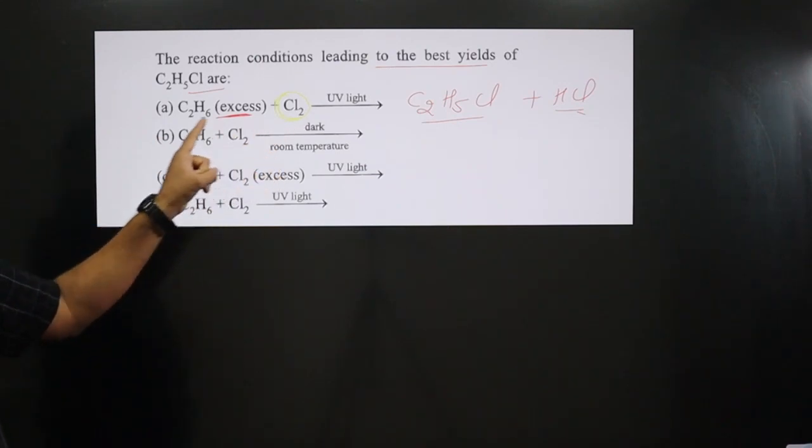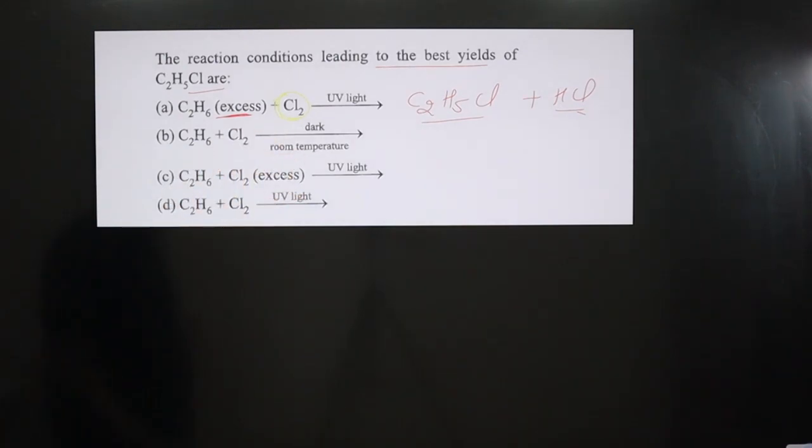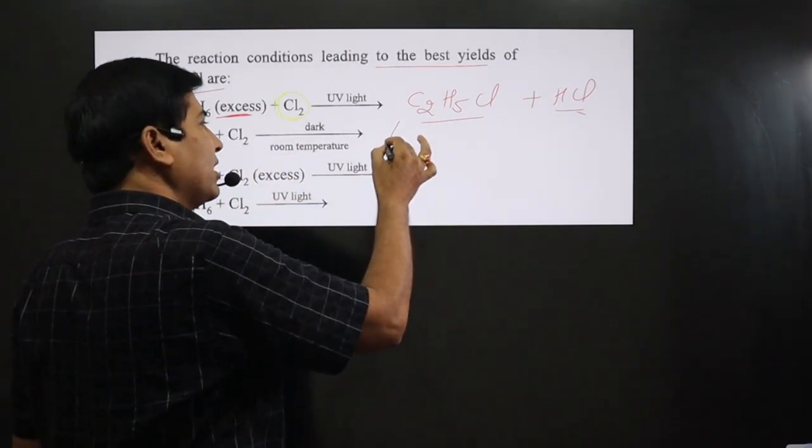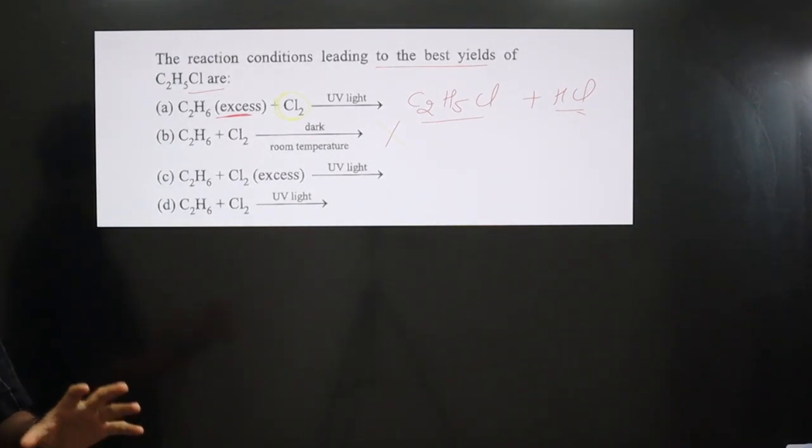Next we have halogenation reaction, but it is in dark room temperature. Keep in mind halogenation reaction does not take place in the dark. It is going below room temperature, so the reaction will not occur.